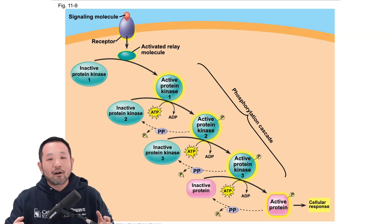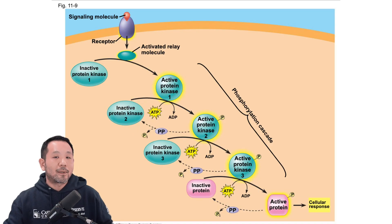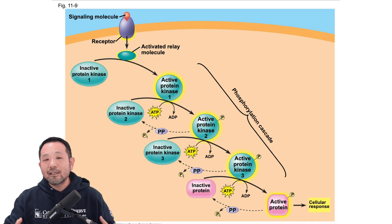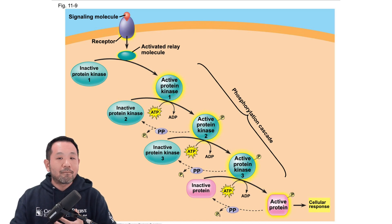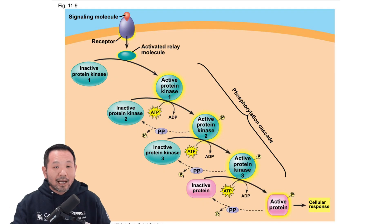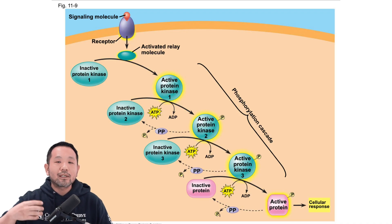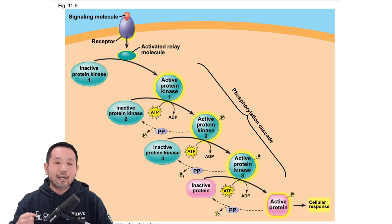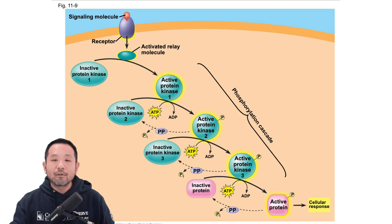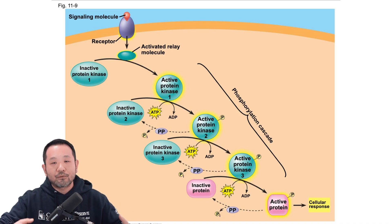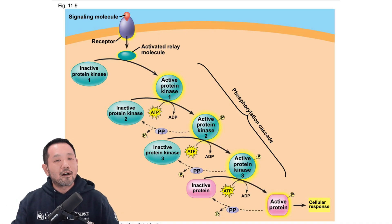Here's how cyclic AMP ties into a G-protein-coupled receptor: the GPCR receives a ligand and activates a G-protein, which acts as a messenger along the plasma membrane. One enzyme a G-protein can activate is adenylyl cyclase, a membrane-bound protein that converts ATP into cyclic AMP. Many cyclic AMP molecules are produced when adenylyl cyclase is activated, and each can trigger the phosphorylation cascade. In this cascade, cyclic AMP activates protein kinase 1, which phosphorylates protein kinase 2, which phosphorylates protein kinase 3, and so on — this is the phosphorylation cascade.